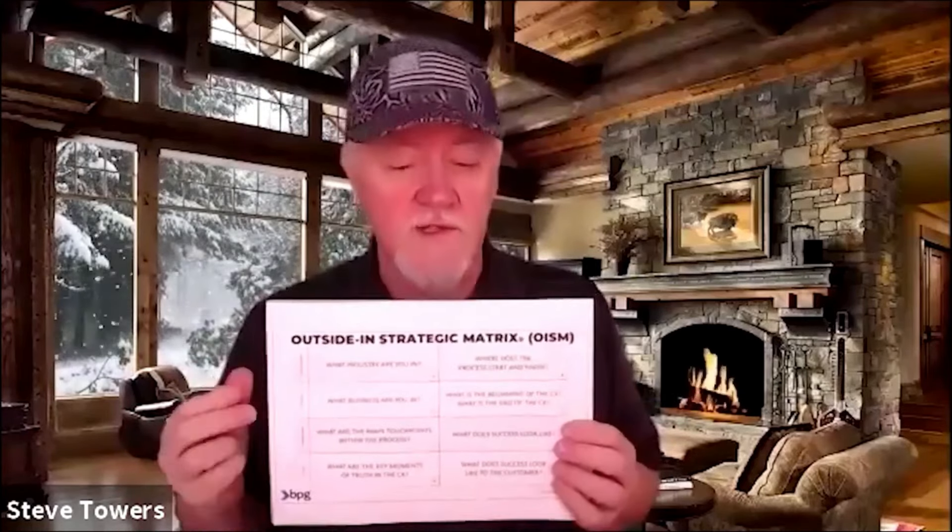Then we'll get into the outside-in strategic matrix and we'll have a discussion around how this can reframe processes and experiences forever. What is that about? Where does it start and end, and where could it go to? And then we'll have a look at the successful customer outcome canvas and look at a specific customer example — how we reframe to the outside-in not through customer segmentation, but through customer categorization. So categorizing by need rather than segmenting by circumstance.